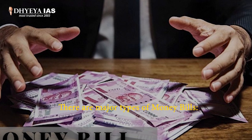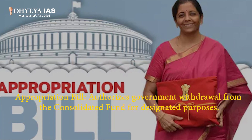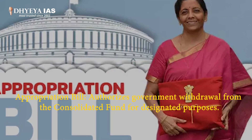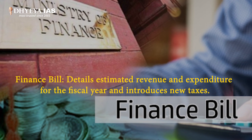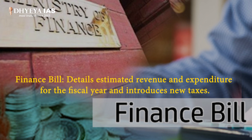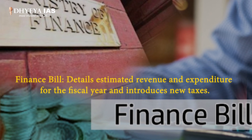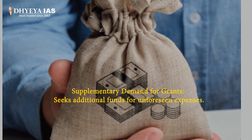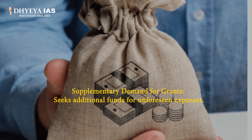There are major types of money bills. The Appropriation Bill authorizes government withdrawal from the Consolidated Fund for designated purposes. The Finance Bill details estimated revenue and expenditure for the fiscal year and introduces new taxes.